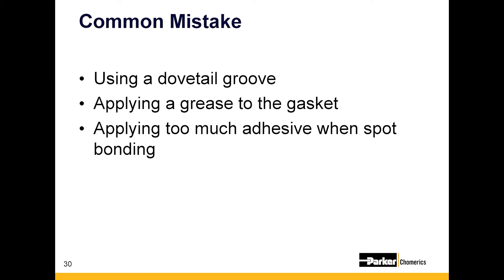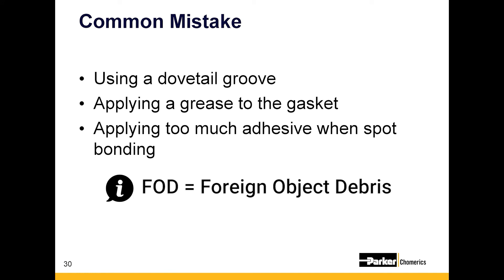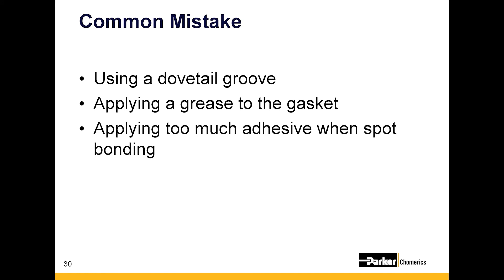One of the most important common mistakes is using a dovetail groove. Conductive elastomer gaskets should always be designed in compression — never in shear, tension, or rotation of any kind, due to FOD concerns. A gasket installed in a dovetail groove can shear on the way in or out. Additionally, elastomer gaskets need a minimum of three points of contact to create a ground or shield. An underfilled gasket in a dovetail groove may give you as little as one point of compression, which won't provide shielding, grounding, or water sealing.